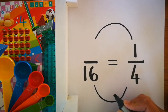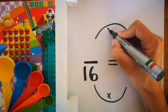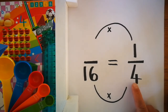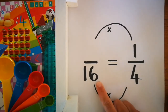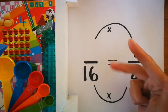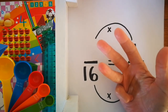When we work with equivalent fractions, we work with multiply. This is how I set the problem up. I'm going to look at the 4 and ask myself, what can I do to the 4 to make it 16? So, I'm going to count in 4s: 4, 8, 12, 16. I timesed 4 by 4.